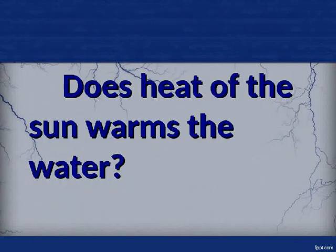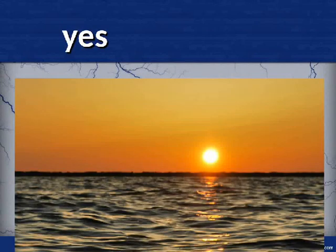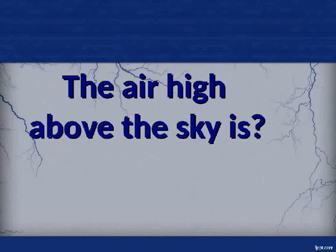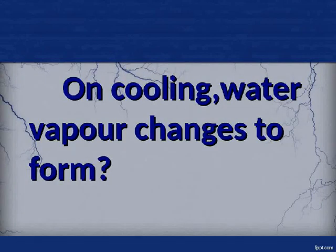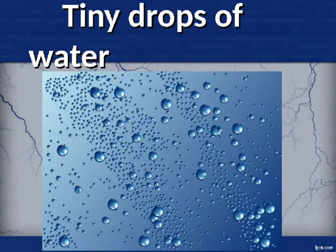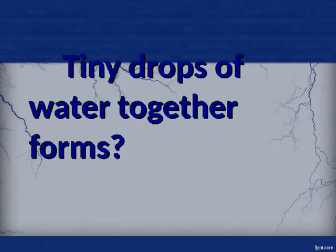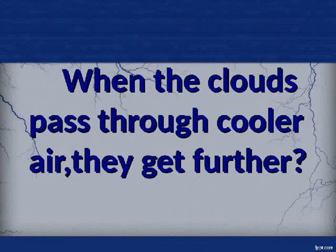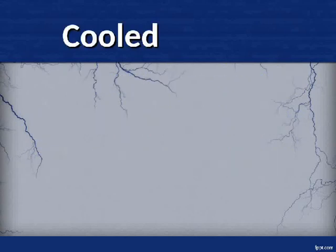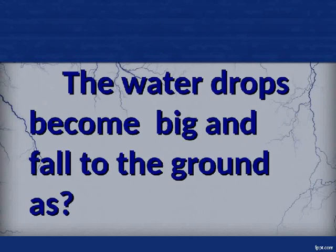Does the heat of the sun warm the water? Yes. The air high above the sky is cool. On cooling, water vapor changes to form tiny drops of water. Tiny drops of water together form clouds. When the clouds pass through cooler air, they get further cooled. The water drops become big and fall to the ground as rain.